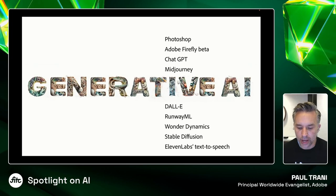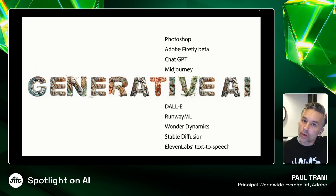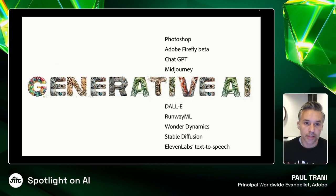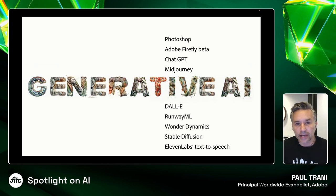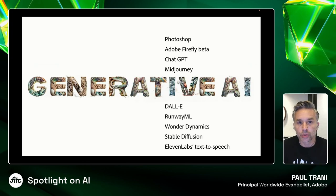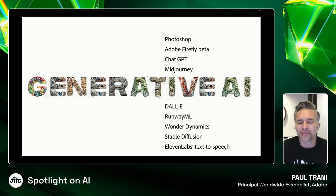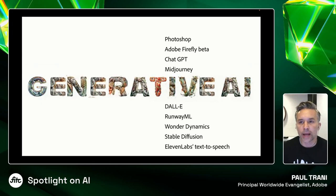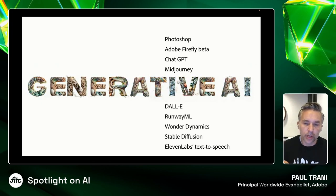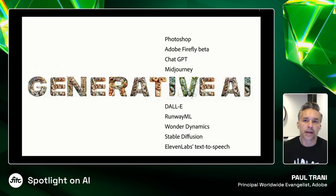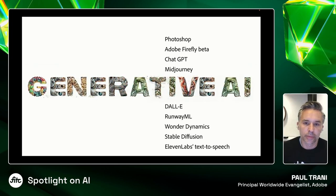We also have Runway ML for creating some video. I want to actually do a lot of this stuff and show you actually working in everything. Wonder Dynamics, Stable Diffusion for creating visuals, ElevenLabs for text-to-speech. You just record a little chunk of your voice — like 15 seconds, the longer the better — upload to ElevenLabs, and then you can write any script that you want.